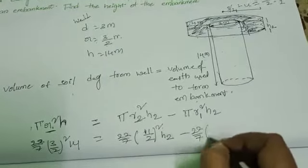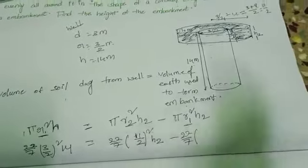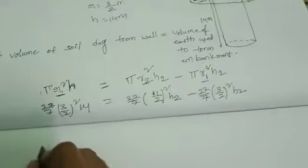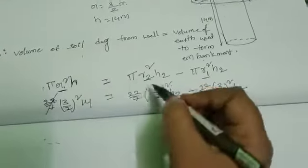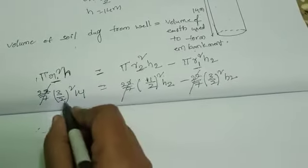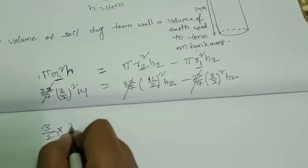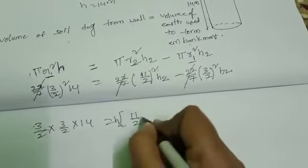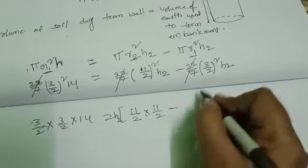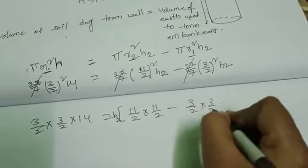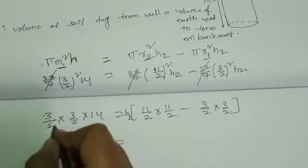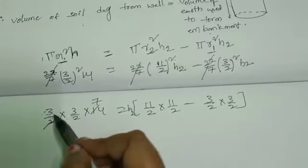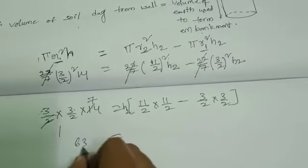Pi value is 22 by 7. R1 is the radius of the well: 3 by 2. So we have: 22/7 × (3/2)² × 14 = 22/7 × H2 × [(11/2)² − (3/2)²]. The 22 by 7 cancels. We get: (3/2) × (3/2) × 14 = H2 × [(11/2 × 11/2) − (3/2 × 3/2)]. That gives 63 by 2 on the left. H2 is common on the right.